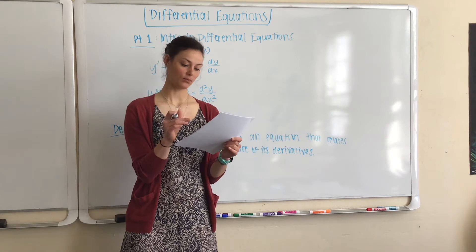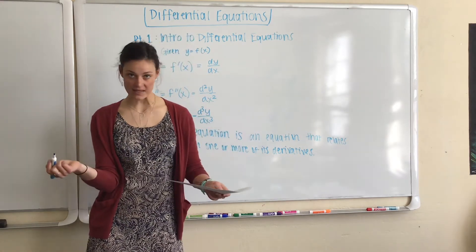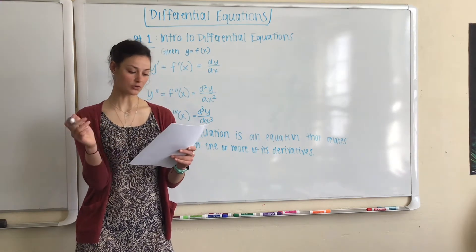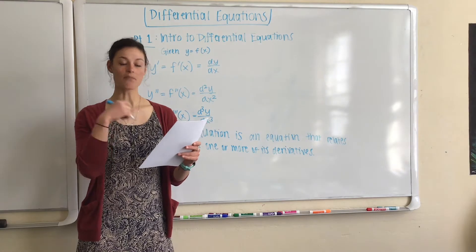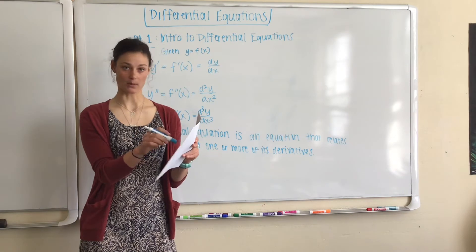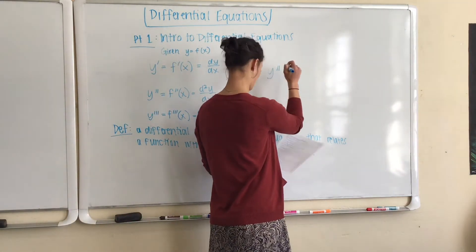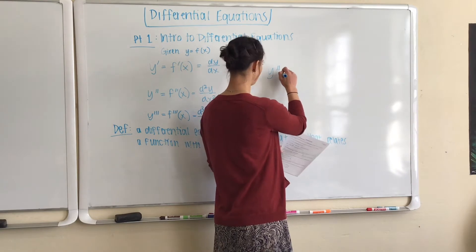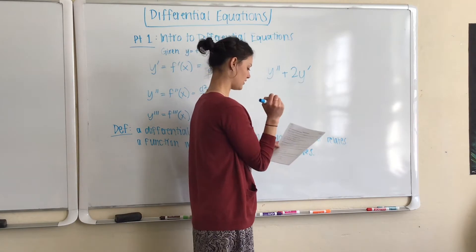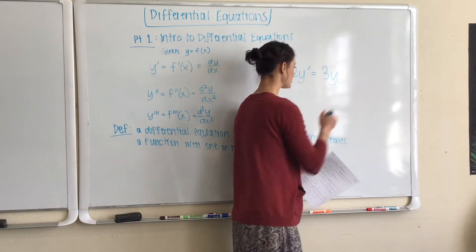y'' + 2y' = 3y. So if we were to translate this equation into English, what we are truly looking for, the solution, would be some function whose second derivative, y'', plus 2 times the first derivative is equal to 3 times the function itself.